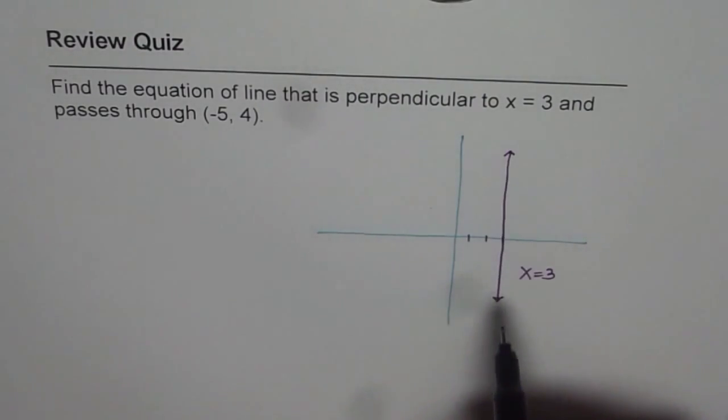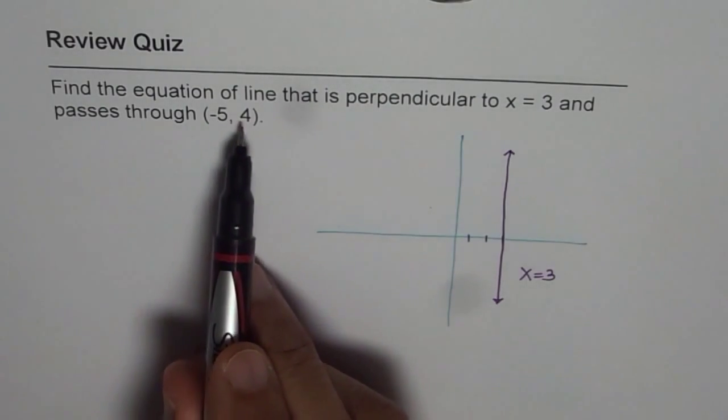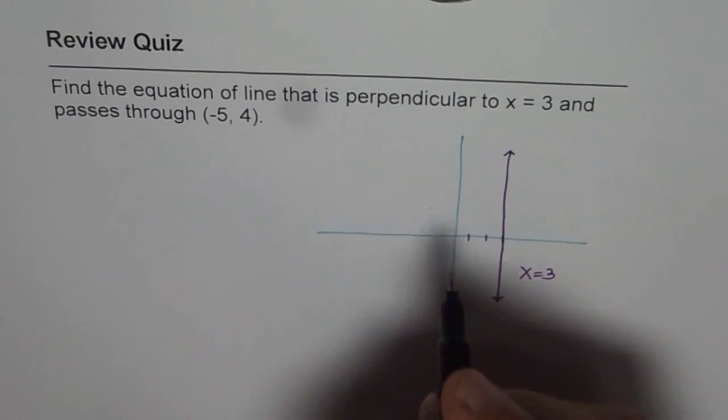A line perpendicular to the vertical line is going to be a horizontal line with slope of 0. Since the horizontal line passes through the point (-5, 4), that is to say, let's go back.